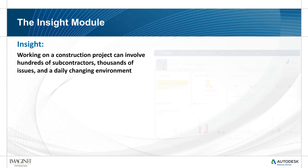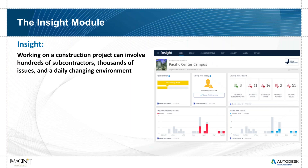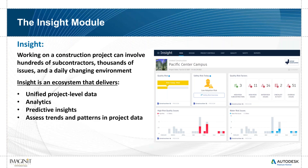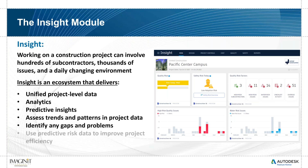The Insight page is really for the project owner to get deeper insights and look for problems. With the Insight module, we really get to the most important part of BIM 360 — which is risk management more than anything else. We'll have dashboards for quality risk, unified project-level data all in one place, analytics, predictive insights, trend identification, and predictive risk management to help catch things before they turn into serious problems.